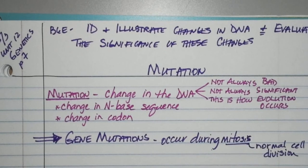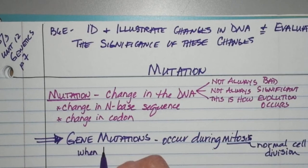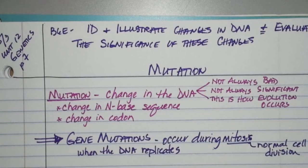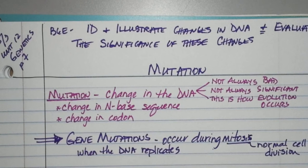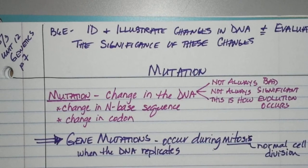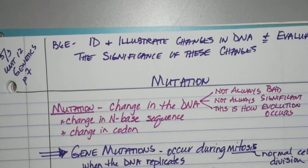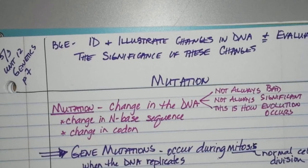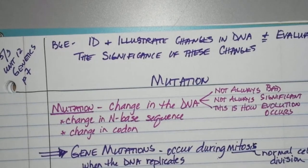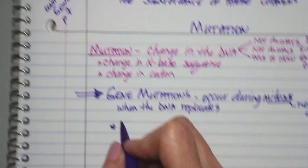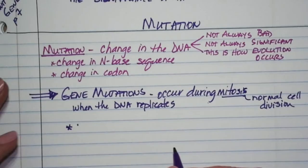So gene mutations generally happen during mitosis, specifically when the DNA replicates. You have the S phase where the DNA is replicated. You synthesize new DNA by taking your original strand of DNA, splitting it in half and making new copies for both halves. During that process, this is when a lot of the gene mutations occur.